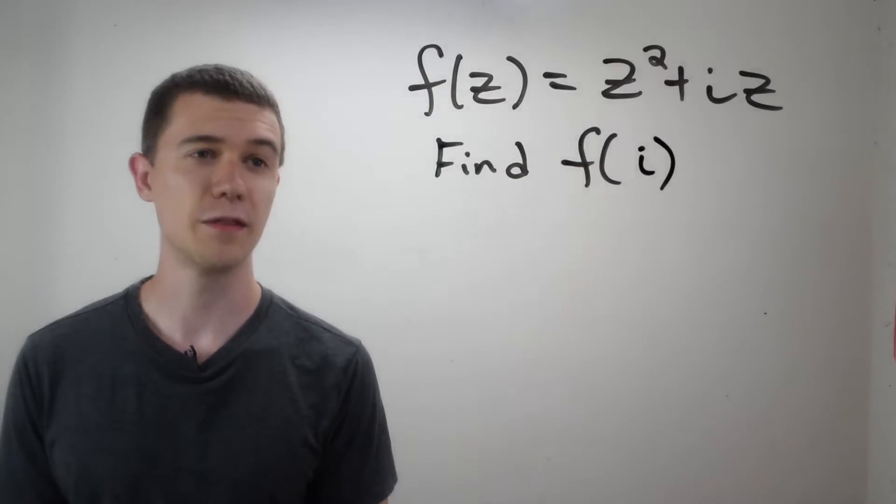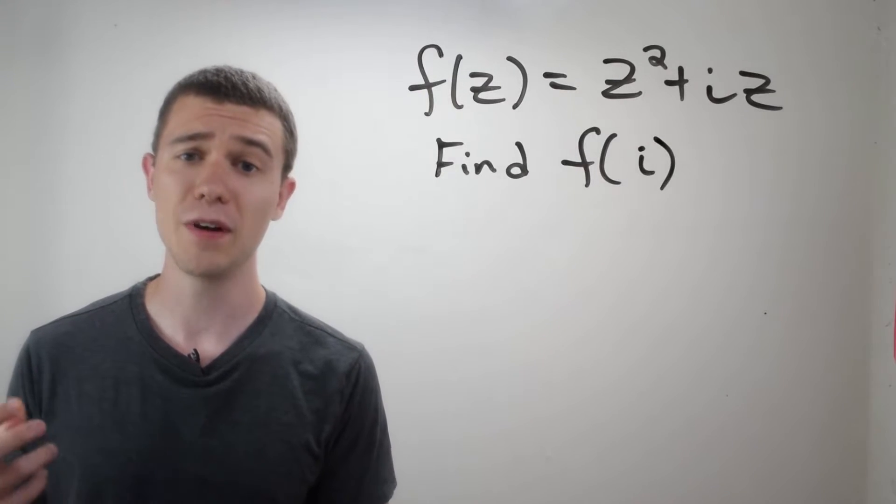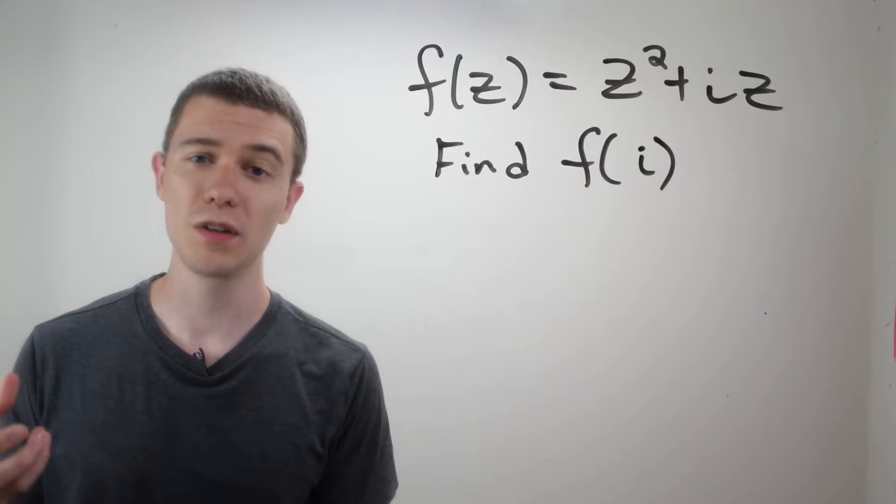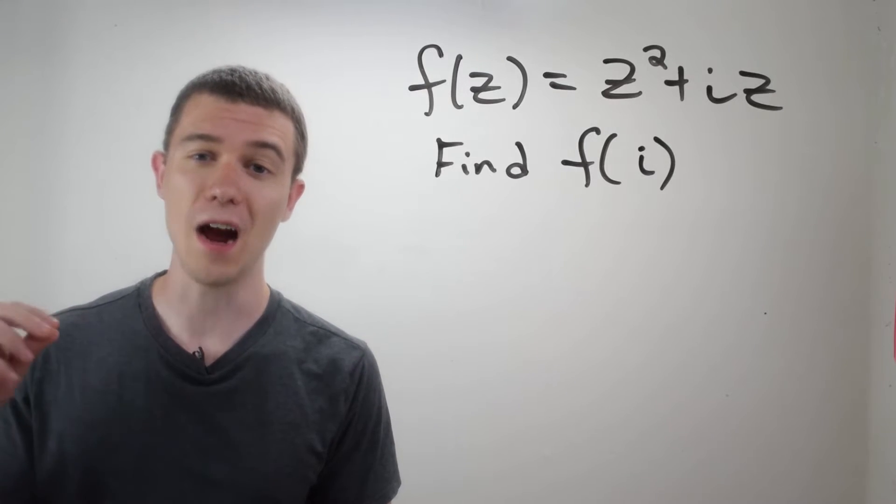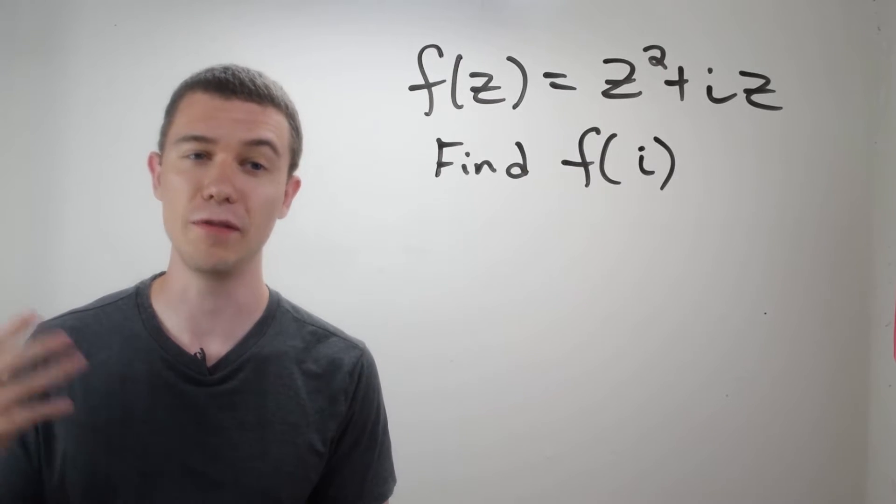Here I have a complex function f of z equals z squared plus iz, and I want to find f of i. And this works very similarly to how regular real functions work. I'm just going to substitute in this value everywhere I see a z.